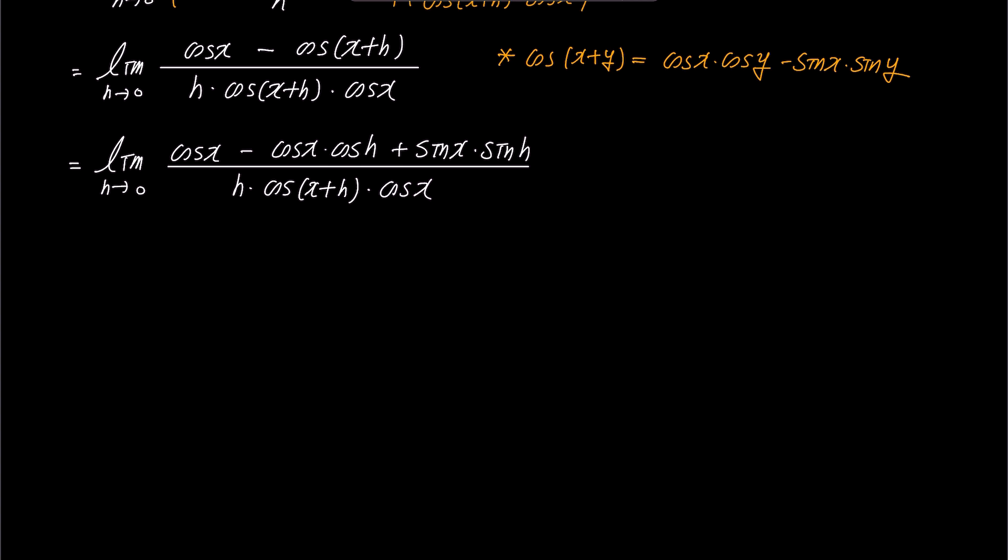Looking at the terms in the numerator closely, we can notice two occurrences of cosine x. We can factorize these terms, resulting in the numerator of this limit becoming cosine x times 1 minus cosine h plus sine x times sine h, and the denominator remaining h times cosine x plus h times cosine x.